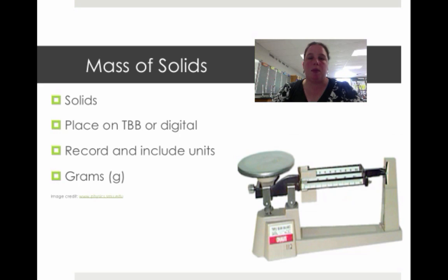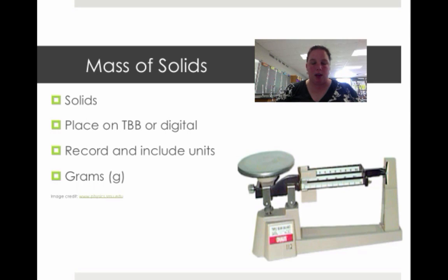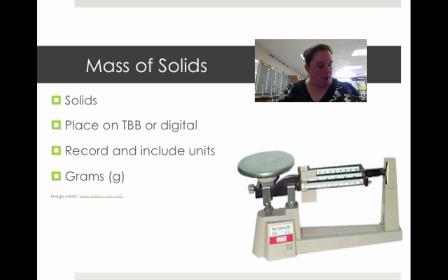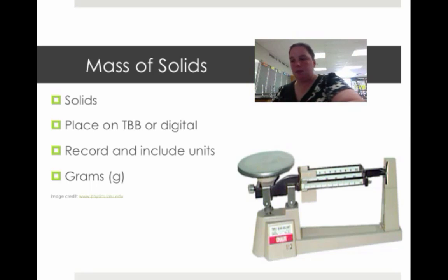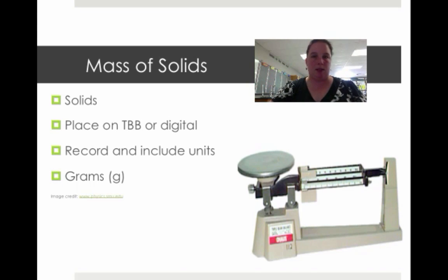So let's talk about the mass of solids. To find the mass of a solid, you simply take your triple beam balance or your digital balance, place whatever it is you're looking at — so if you're looking for the pencil — and then you record it. You need to get this line to measure up, and once you do, you'll know how many grams it is.